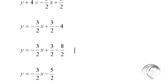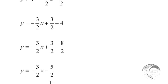I want to add these two numbers here. This negative 4 becomes negative 8/2, and 3/2 minus 8/2 is negative 5/2. I finally get to my answer: y = -3/2 x - 5/2. This is the line that goes through those two original points.